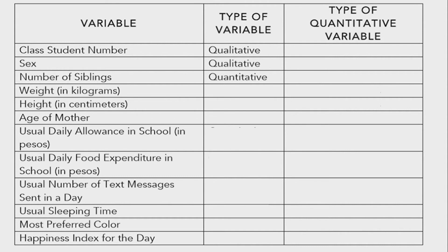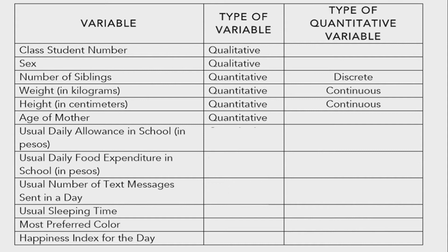Number three: number of siblings — this is quantitative. What type? Discrete, of course — it is not measured, it is counted. Number four: weight — this is quantitative and continuous, measured in kilograms. Number five: height — quantitative and continuous. Number six: age of mother — this is quantitative and discrete; you just ask 'how old are you?' and there is an exact number. Number seven: usual daily allowance in school in pesos — this is quantitative and discrete.